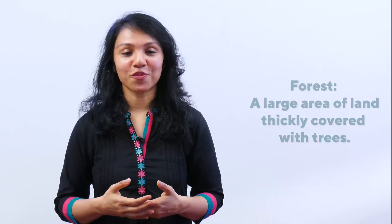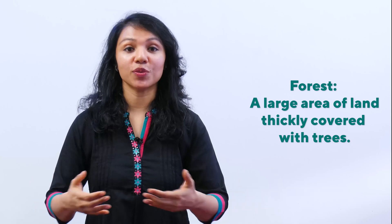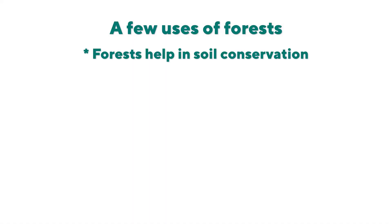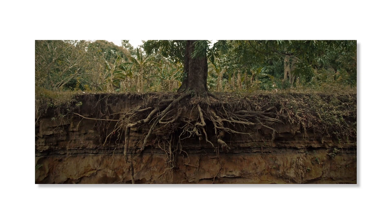How do we define a forest? A forest is a large area of land that is thickly covered with trees. There are many uses of forests. Forests help in soil conservation — they control floods and thus prevent soil erosion, because when trees hold the soil together, it is difficult to erode it.